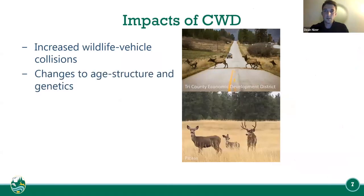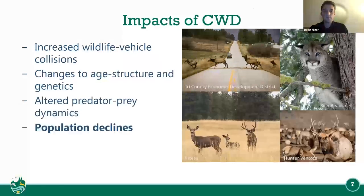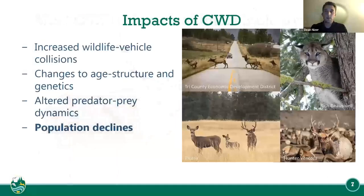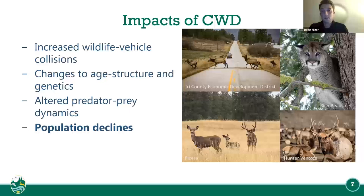The impacts of chronic wasting disease include increased wildlife vehicle collisions, changes to age structures and genetics, altered predator-prey dynamics, and in return, population declines.